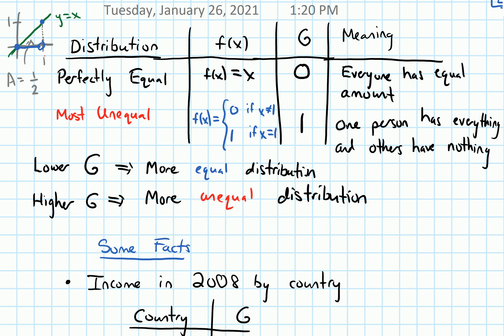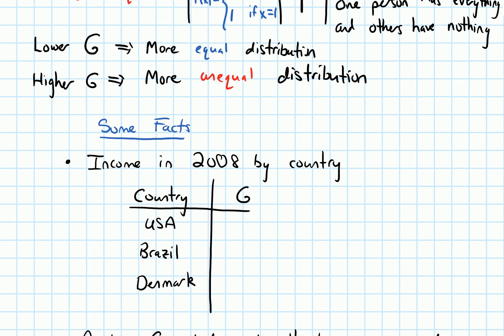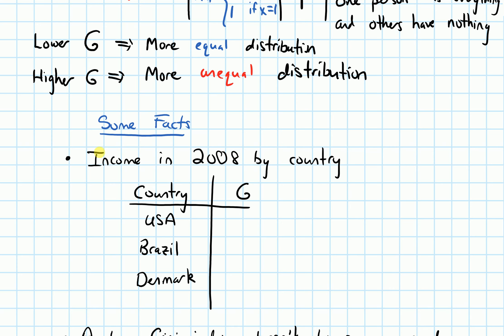I want to end this video with some facts about the Gini index, and then we'll focus the next video on doing some examples. With income of countries in 2008, I'm going to make a table here of what the Gini index was for income in these countries. The countries are the United States, Brazil, and Denmark. For the US, the Gini index for income in 2008 was 0.45. For Brazil it was 0.567, so that would mean Brazil had a more unequal distribution of income. And Denmark had a more equal distribution; its Gini index was 0.24. It was lower than the US—this is actually one of the better ones in the world in 2008.